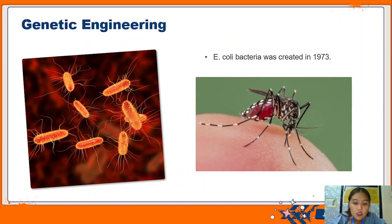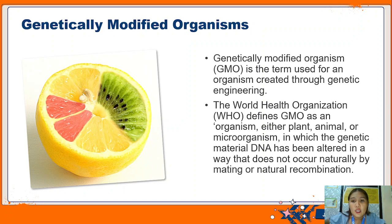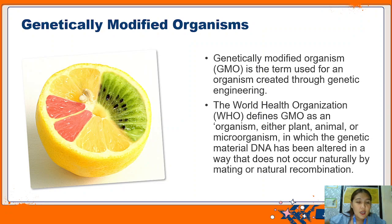However, despite the many possibilities of creating solutions for problems and opening doors for innovations in genetic engineering, there are still many oppositions. A genetically modified organism or GMO is the term used for an organism created through genetic engineering. The World Health Organization defines the GMO as an organism - either plant, animal, or microorganism - whose genetic material or DNA has been altered in a way that does not occur naturally by mating or natural recombination, meaning the genes have been modified. For example, a fruit may have genes from pumelo, lemon, and kiwi combined.